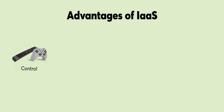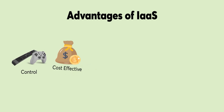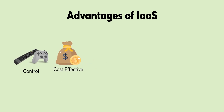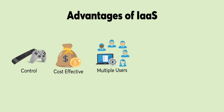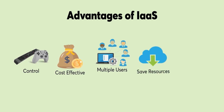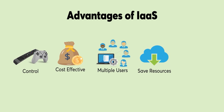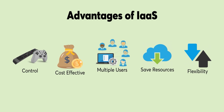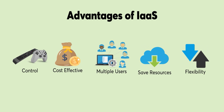IaaS is a great tool for businesses, as it comes with several advantages. More control: IaaS tools on cloud infrastructure give companies significant control over their software and hardware. Cost effective: simple pay-as-you-go pricing models mean you only pay for the resources you use. Multiple users can access the resource, making it great for large, enterprise-level teams. Save on resources: it removes the need to buy, install, and maintain a physical server. Increased flexibility: you can easily scale or downsize your IaaS provider to reflect your changing business needs.